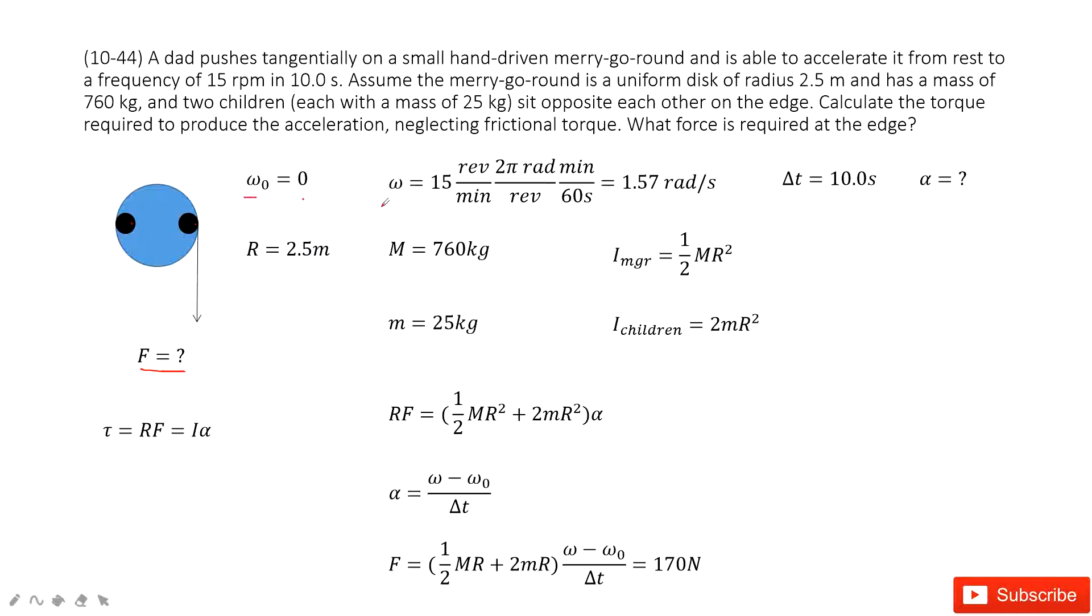the angular velocity is zero. The final angular velocity is given: 15 rev per minute. Then we must convert it to the unit radians per second. This is how I converted the unit. And the time taken, Δt, is given as 10 seconds.